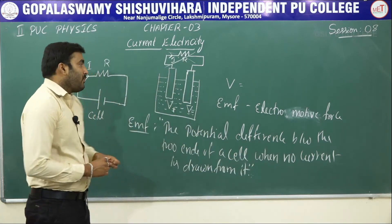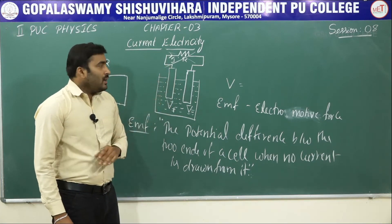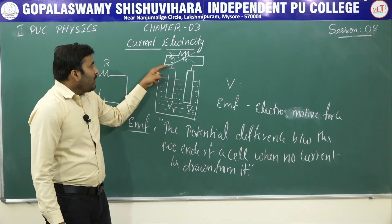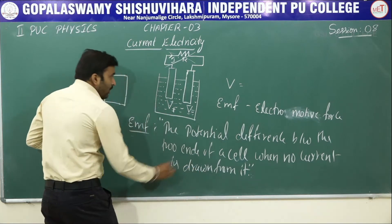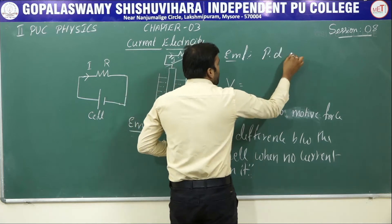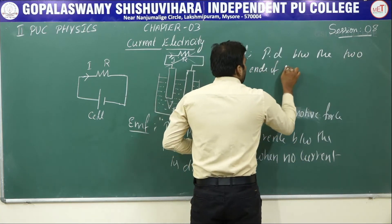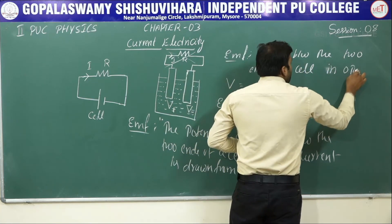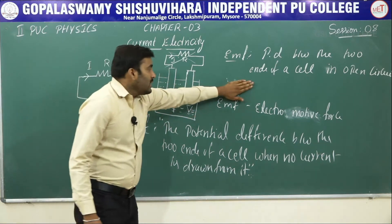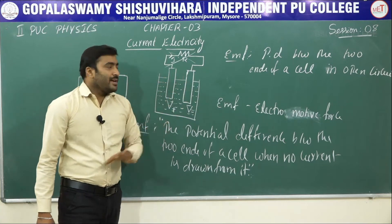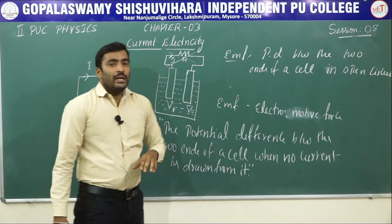You can define EMF in one more way. When no current is flowing through the cell, the potential difference is called EMF and the circuit is open. So EMF can also be defined as the potential difference between the two ends of a cell in an open circuit, which means we have not connected the external resistor. That is the second definition of EMF.